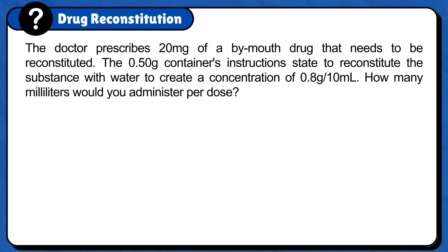This problem is saying that we have a container with 0.50 gram, and once it is reconstituted, we'll have a concentration ratio of 0.8 gram per 10 milliliters. So for every 0.8 gram of medication, we'll give 10 milliliters.